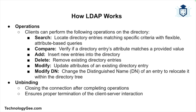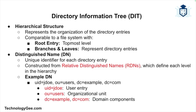Once connected, the client can perform various operations on the directory. It can search for directory entries matching specific criteria, using complex queries based on attributes and their values. It can compare an attribute value of an entry with a different value to check for a match. It can add new directory entries, delete existing ones, or modify the attributes of an existing entry. The client can also change the distinguished name, or DN, of a directory entry, effectively moving it within the directory tree. After completing operations, the client closes the connection — this is known as unbinding.